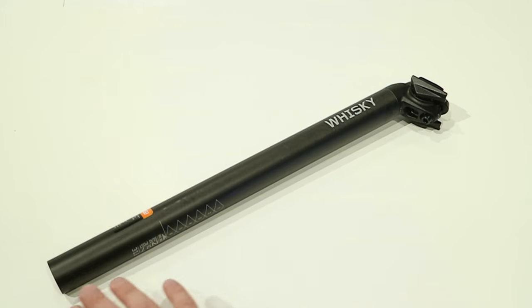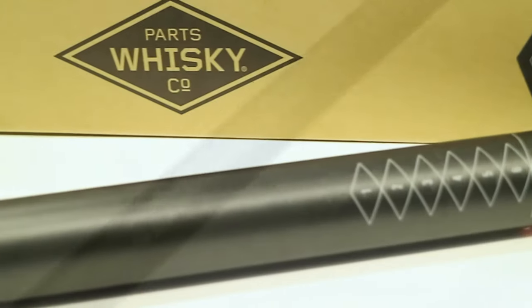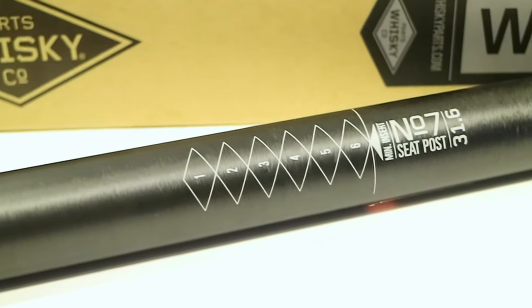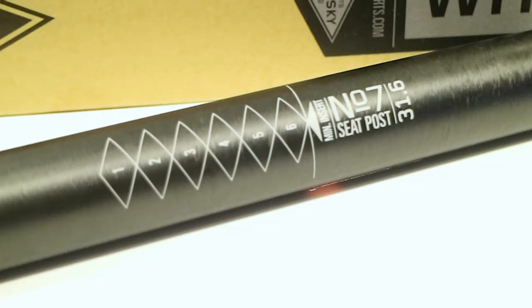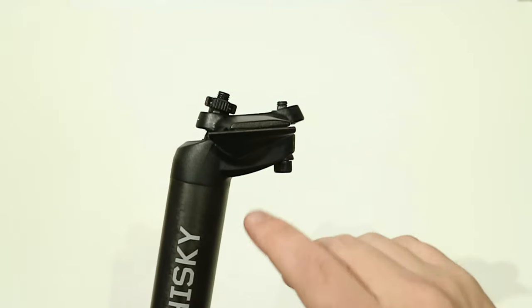The one we're looking at here is a 31.6 in diameter. It's going to be 400 millimeters long. You actually have nice markings there to be able to be sure that you get this set up in the right position, and then it's also going to have that aluminum head with an 18 millimeter offset.